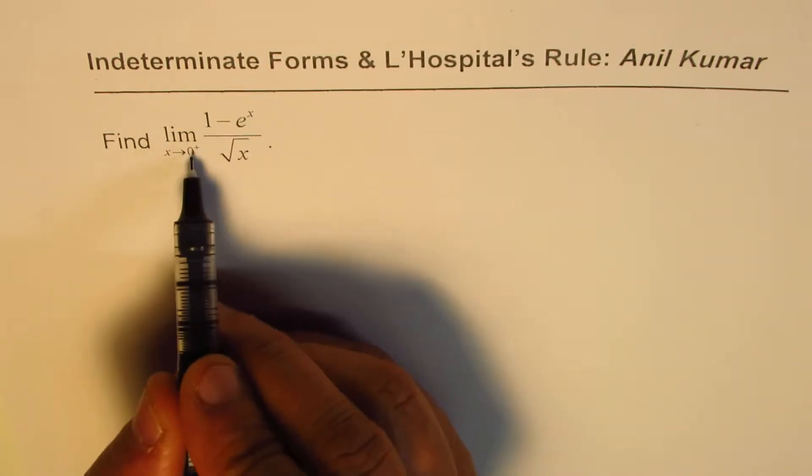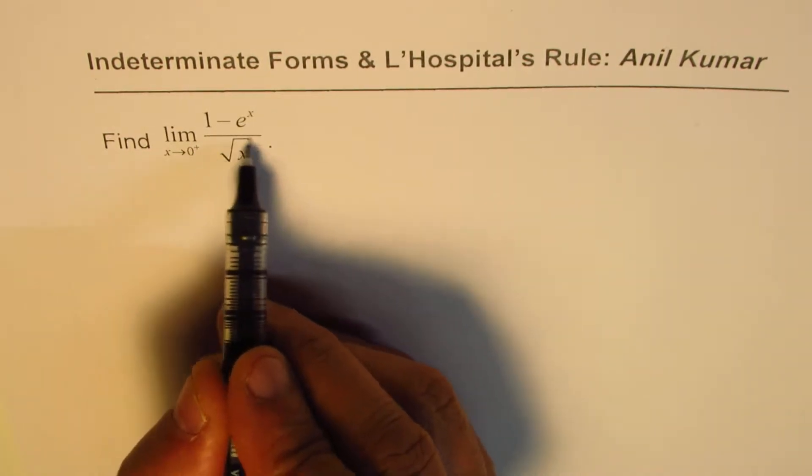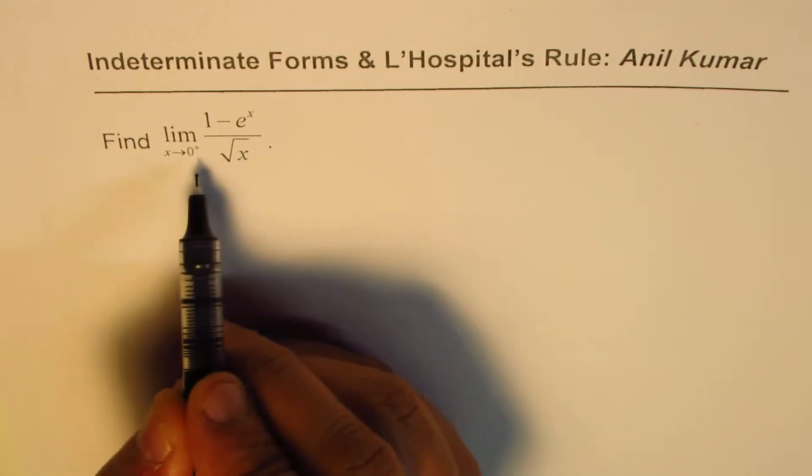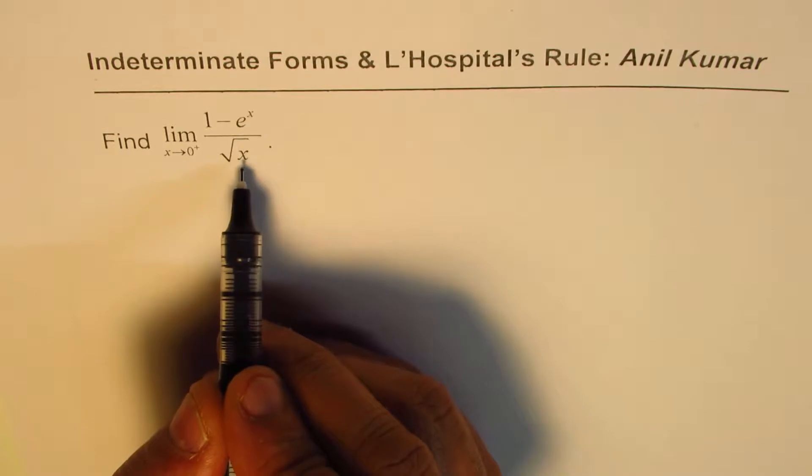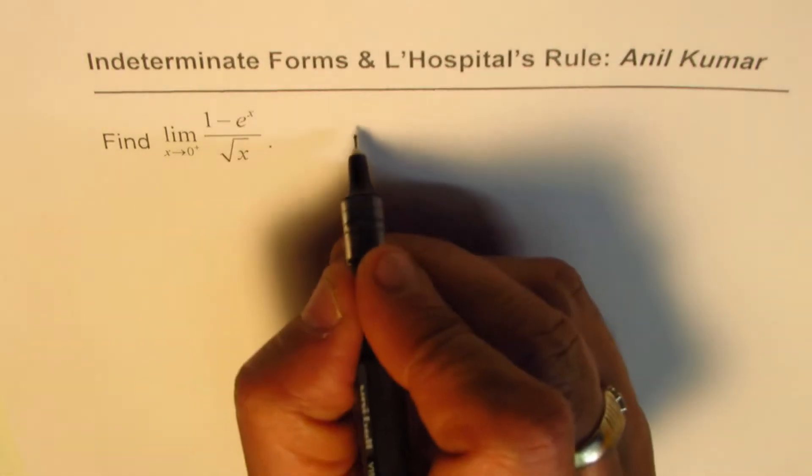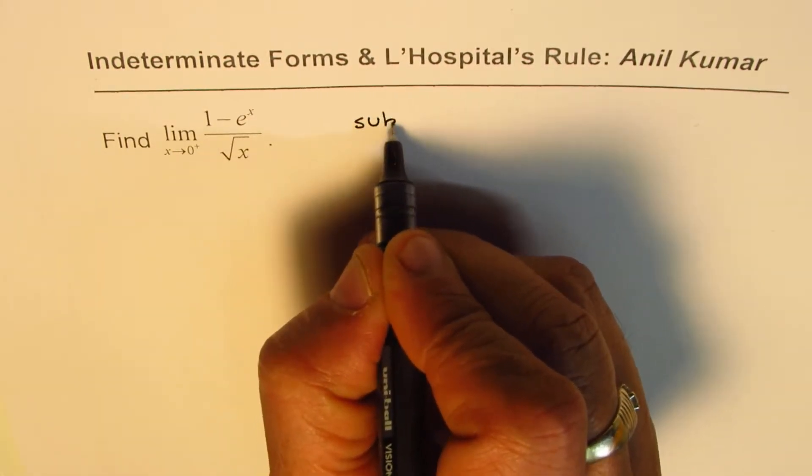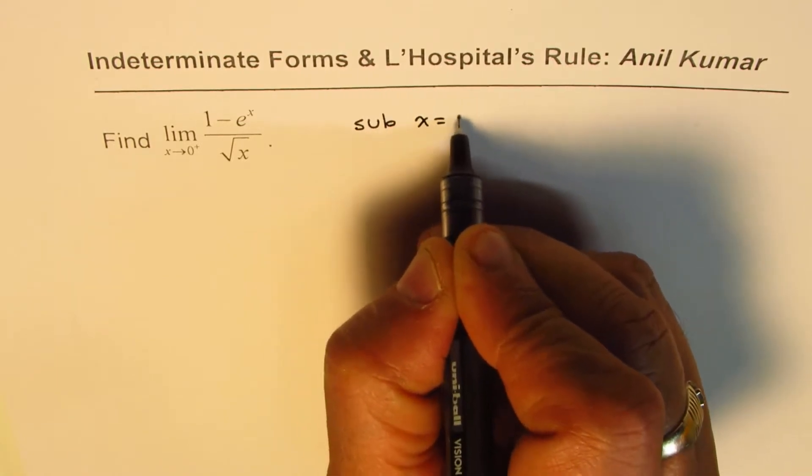So if I substitute 0 for x, while 0+ because square root of x is only valid when we have x which is greater than or equal to 0, right? So if I substitute x equals 0, what do you